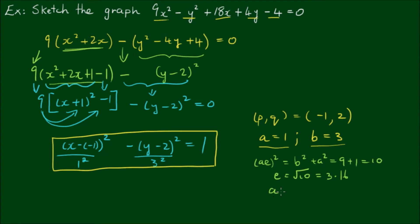And with the distance ae also equal to 3.16, we have the focal points at 3.16 units either side of the center point. For the directrices, these are at a distance a/e either side of the center point.